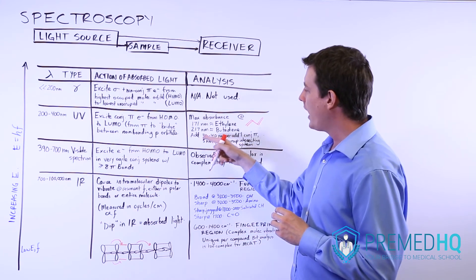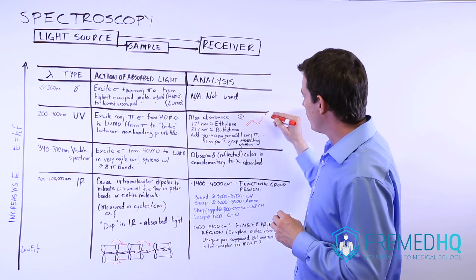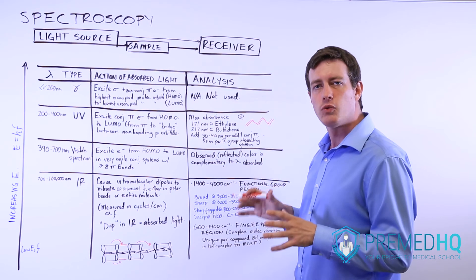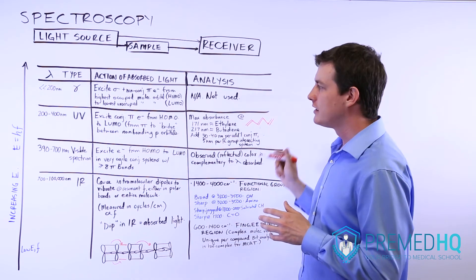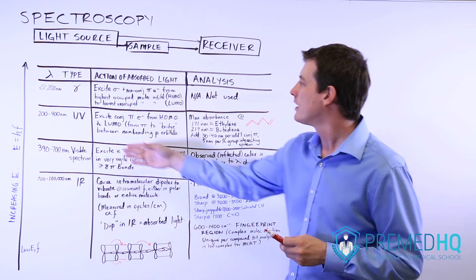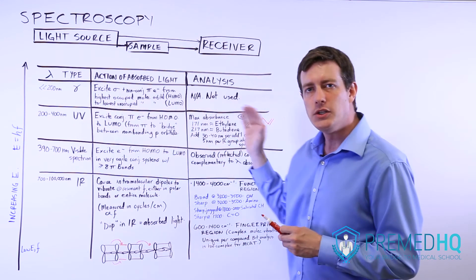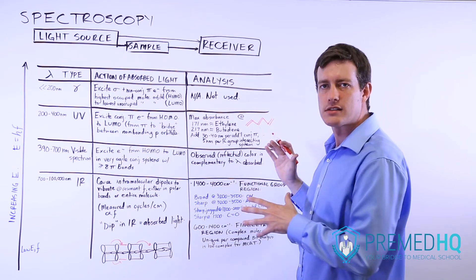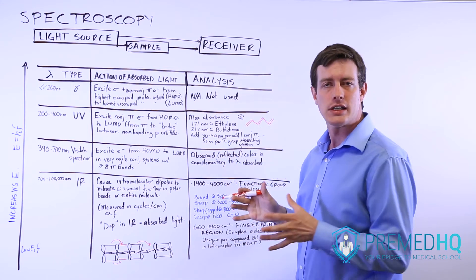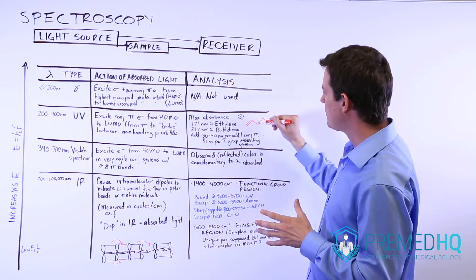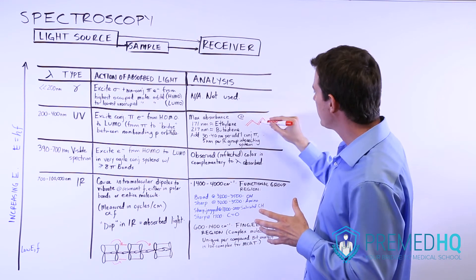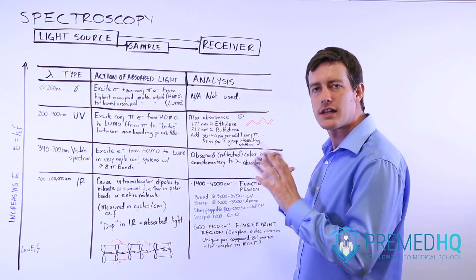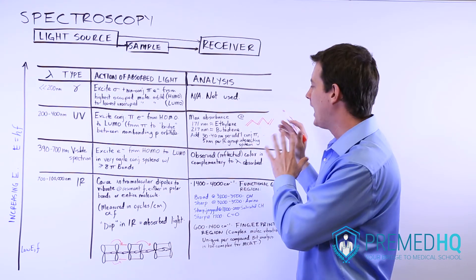And then if you add 30 to 40 nanometers for each additional conjugated pi bond, you have a very, very good way of figuring out what kind of conjugated system is present in your sample. So when you're looking at ultraviolet spectroscopy, you can use the nanometer absorbance to tell you what size the conjugated system is. If it's 217, then you're dealing with butadiene, which is just a double bond, single, and then double. And then for every additional double bond in that conjugated system, add 30 to 40 nanometers, and that will tell you the maximum absorbance at that level.